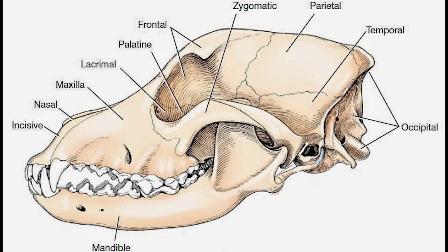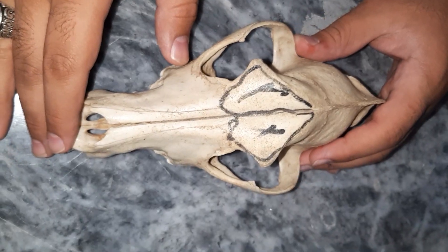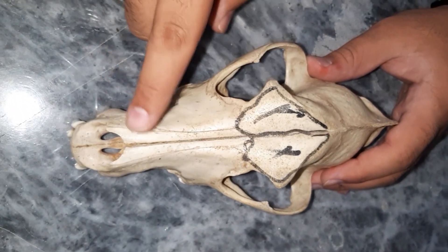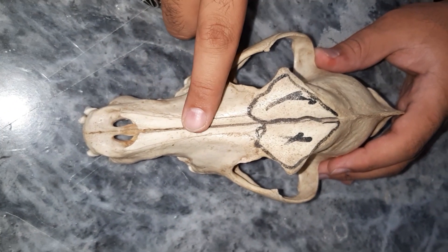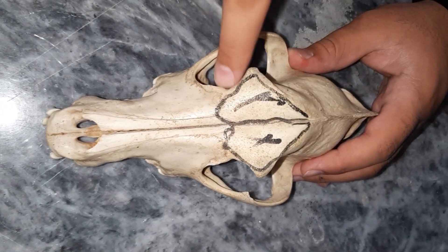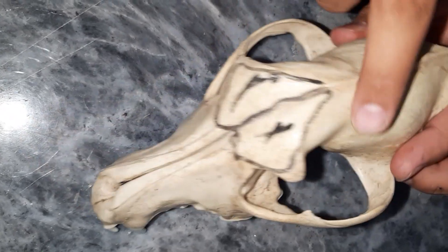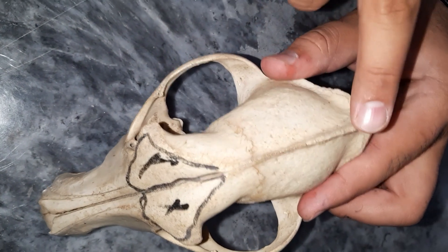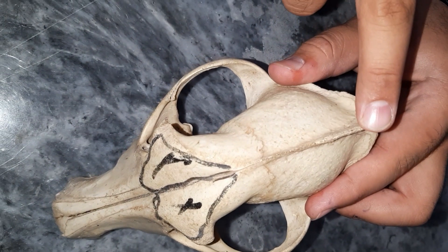Hi guys, welcome to our YouTube channel. Today we are going to discuss the skull of a dog. We're going to talk about the dorsal side first. This is the nasal bone, this is the frontal bone, parietal bone, and intraparietal bone.